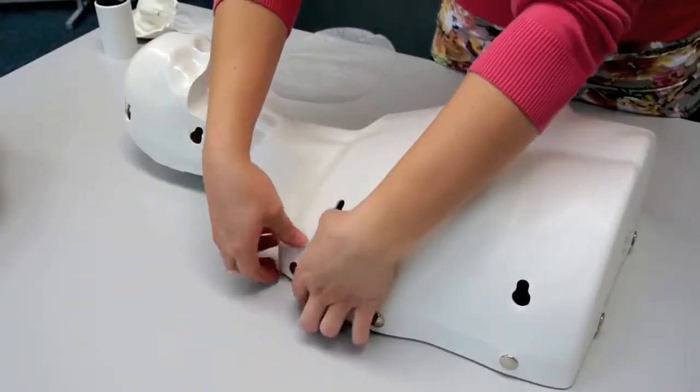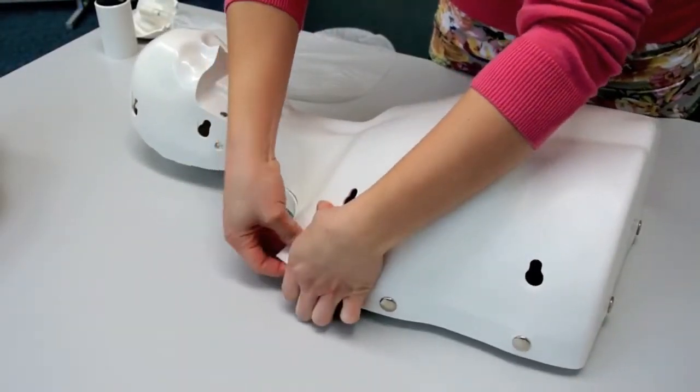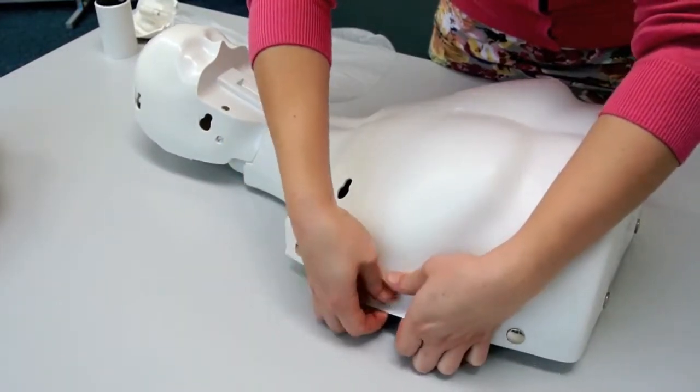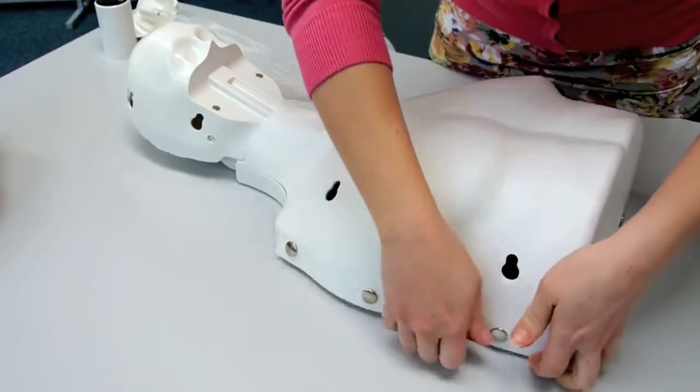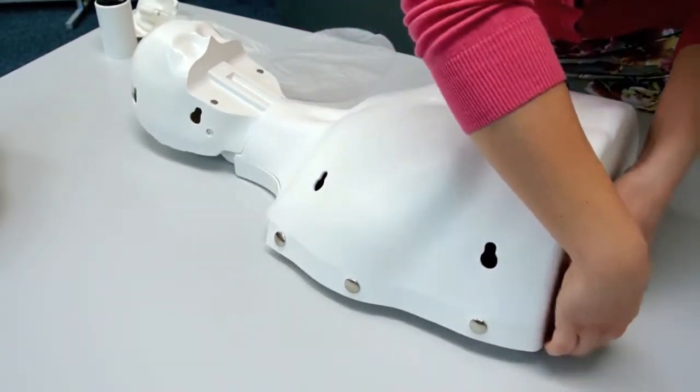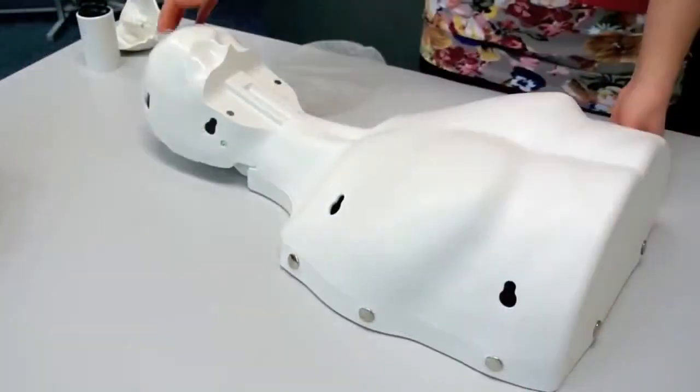Changing the compression spring allows for child mode. Once the thorax skin, face skin, and lung bag have been removed, the thorax cover can be detached and removed.